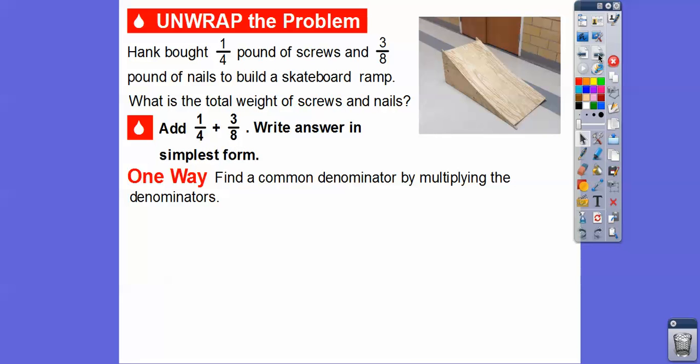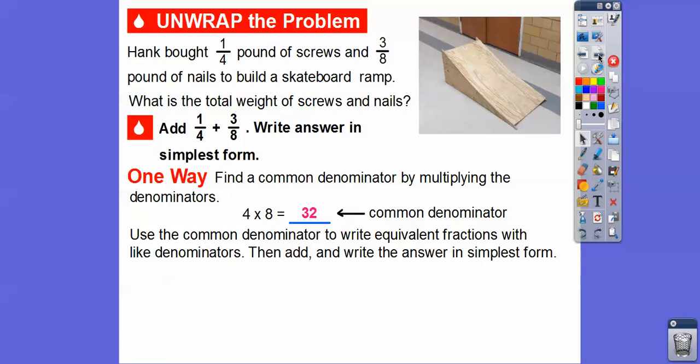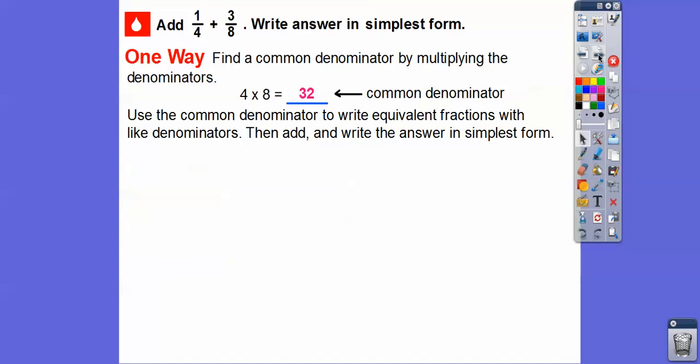If we multiply four times eight, four times eight equals 32. So that's going to be a common denominator. We're going to use the common denominator to write equivalent fractions with the same denominator of 32. Then we'll add those once we get common denominators and write them in simplest form.